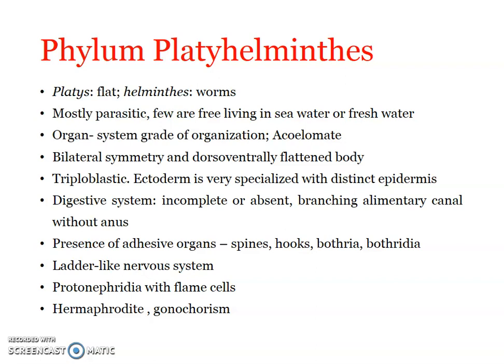The body is unsegmented, except in class Cestoda. We can see differently sized organisms — there are microscopic Platyhelminthes, and some may grow to several meters in length, though the majority are moderate-sized. They have attachment structures like hooks, spines, bothria, etc., mostly common in parasitic forms. Regarding the digestive system, it is incomplete or altogether absent — absent in Cestoda, and present but incomplete and branched in other groups, without an anus.